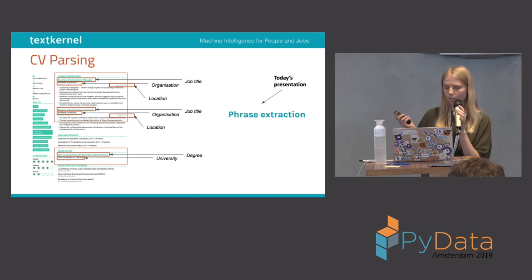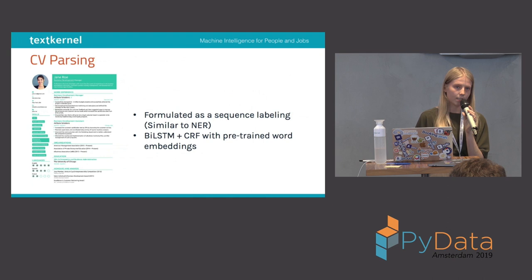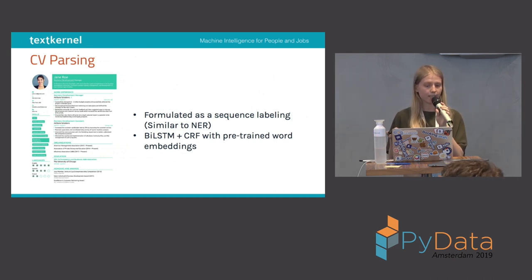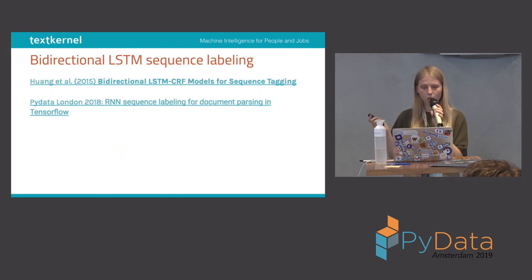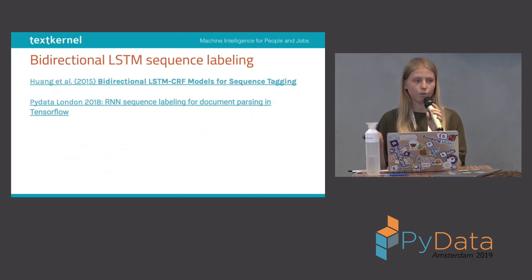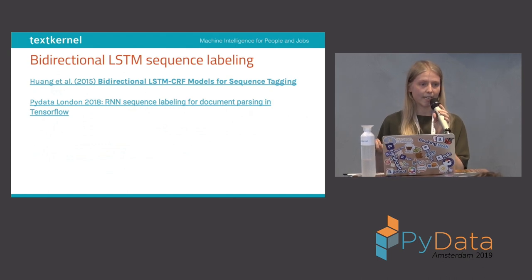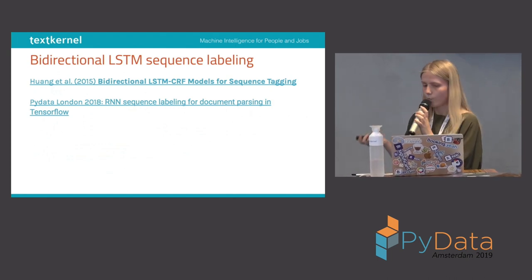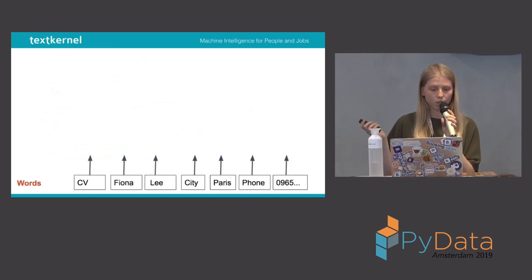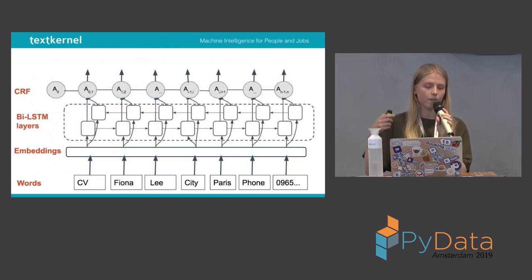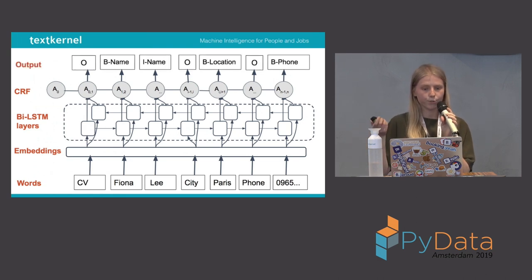CV parsing can be formulated as a sequence labeling task, similar to named entity recognition. To solve this task we use a BiLSTM plus CRF architecture. If you want to read more, I'd recommend the paper by Huang et al. In a nutshell: you have words, you get embeddings from those words, you pass them to the BiLSTM layers, on top you have a CRF layer, and in the end you extract the entities — location, name, phone, and others.